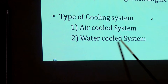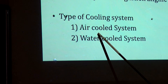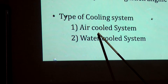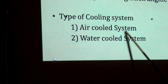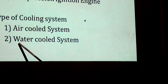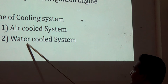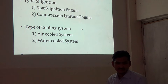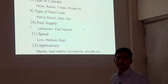The next type of classification is by cooling system: air-cooled and water-cooled. If the engine is cooled using natural air, it is called an air-cooled engine. If the engine is cooled using water, it is called a water-cooled engine. That is the simple classification for cooling.